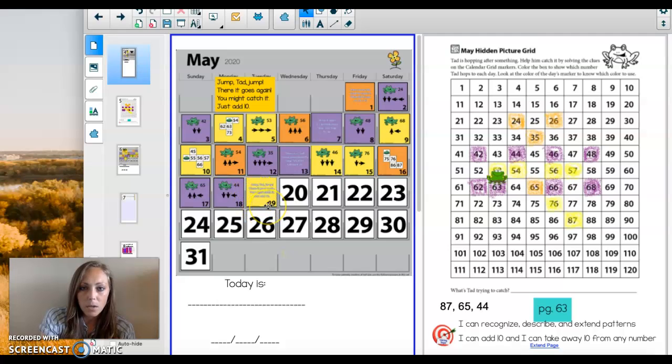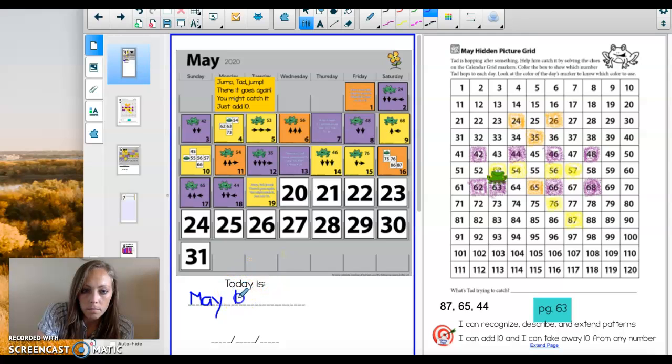I hope you guys knew that today was going to be yellow with a word problem on it. That's exactly what came next in the pattern. So first we're going to start with the date. It is still the month of May, so let's write that down. Today is May, it is the 19th, and it is the year 2020.